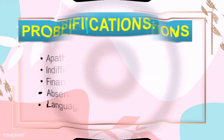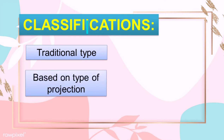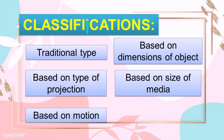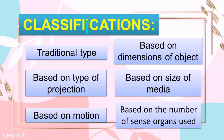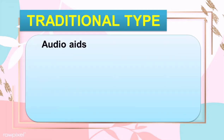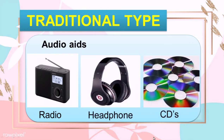Let's proceed to the classifications of the teaching aids. There are six classifications. The first one is the traditional type, second is based on type of projection, third is based on motion, fourth is based on dimensions of object, fifth is based on size of media, and the last one is based on the number of sense organs used. Under the traditional type, there are three sub-classifications. The first one is the audio aids — like radio, headphones, and CDs. These are the things that we can listen to or hear that help us in learning.